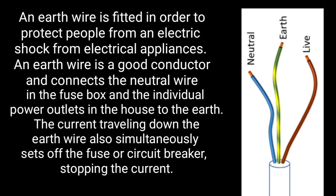An earth wire. An earth wire is fitted in order to protect people from electric shock from electrical appliances. It is a good conductor and connects the neutral wire in the fuse box and the individual power outlet in the house to the earth. The current traveling down the earth wire also simultaneously sets off the fuse or circuit breaker, stopping the current.